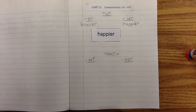And we're going to add I-E-R. Okay. And again, we're still comparing two things. We might say that Billy is happier than Teddy. Okay. So, how many people are we comparing? Two. Two.